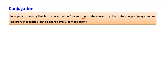Here you can see two pictures. In the first picture, two p orbitals are adjacent to each other with no sp3 carbon in between them. But in the second picture, there is one sp3 carbon between the two p orbitals. In the second case, we cannot say the two p orbitals are linked together — and the condition is they must be linked together. If not, conjugation is not possible.